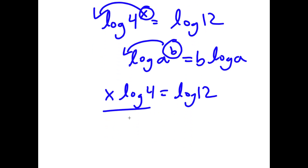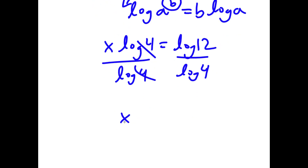Now, if I divide both sides by log 4, these two cancel out, and I get x is equal to log 12 over log 4.